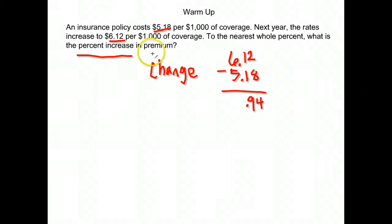To find the percent of increase, you're going to take the change and divide it by the original. Make sure it's the original and not the new. So we're going to take the change that happened of $0.94, the increase, and divide it by the original cost which was $5.18.